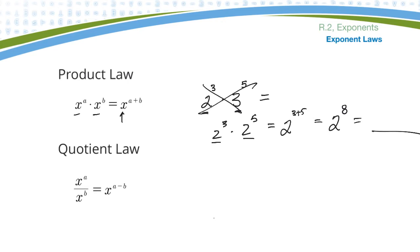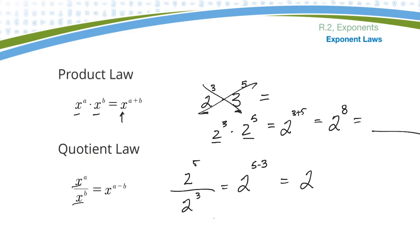Similarly, the quotient law says if I'm dividing common bases, subtract the exponents. So say I have two to the fifth divided by two to the third. That's the same as two — I subtract the exponents — five take away three, or simply two squared. This is one that's easier to figure out.